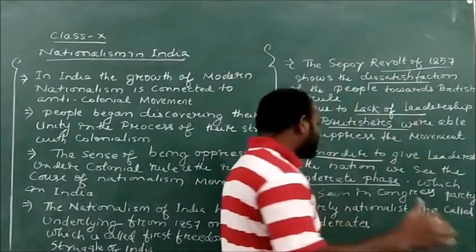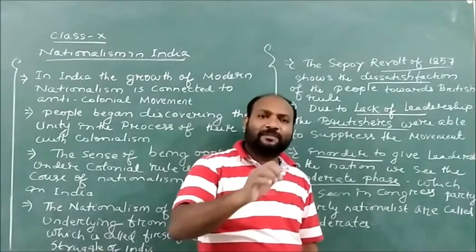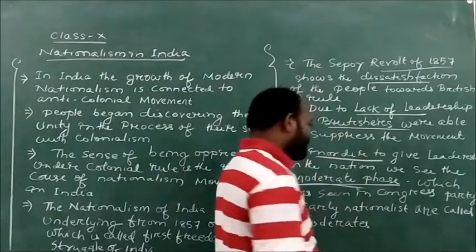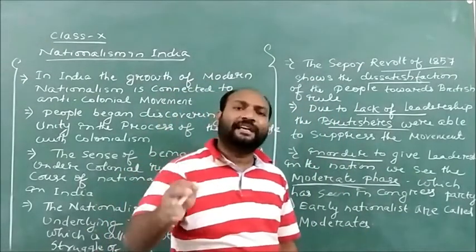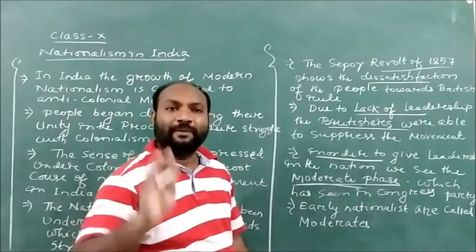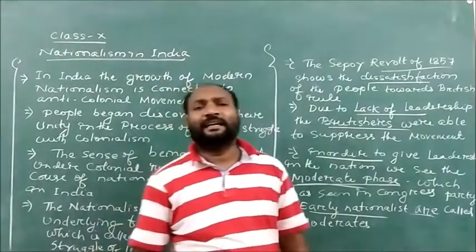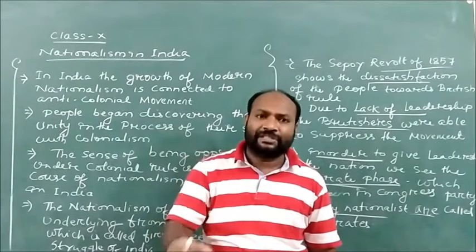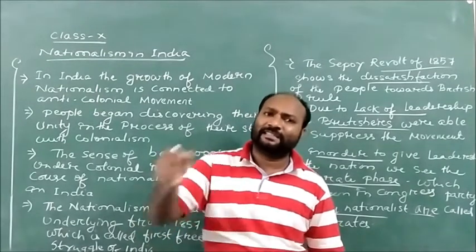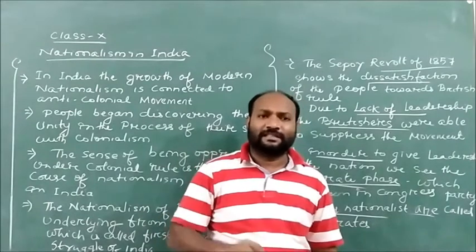In order to provide solid leadership to the nation, we see the leading role of the Congress party. The Congress party was formed in 1885, which is called the moderate phase. In this moderate phase, we see leaders who are having soft natures — they are the early nationalists who had a soft approach towards the British. The moderate phase leaders were approaching the British, appealing to them and demanding they fulfill the needs of Indian society, trying to reform certain rules found during the colonial period.